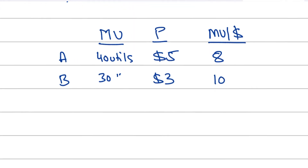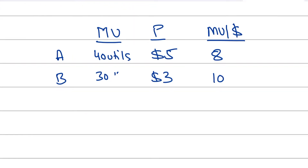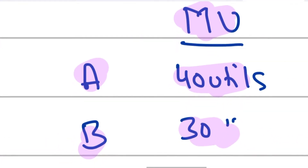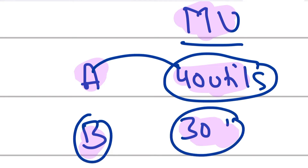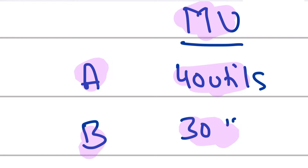Before moving forward, let me give you a smaller example. Let's say I've drawn a table where the marginal utility from good A is 40 utils and from good B is 30 utils. If I just look at the marginal utility as a consumer deciding whether to buy good A or good B, I'd say I should buy good A because it gives me a higher utility of 40 utils instead of 30 from good B.